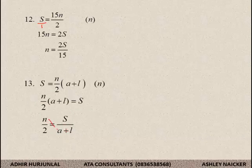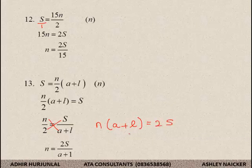Once I come up to this step, I cross-multiply. N. Let me show you that step just to make it a bit easier. N into A plus L is equal to 2S. I divide the left-hand side by A plus L, which means I divide the right-hand side by A plus L. And I end up with that answer.